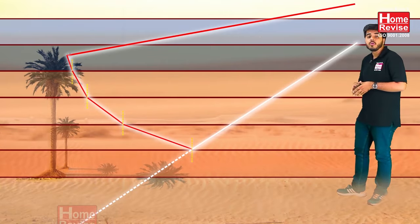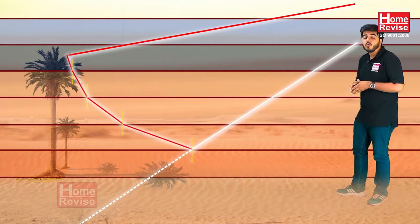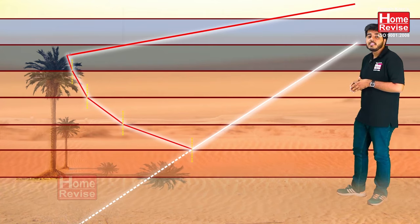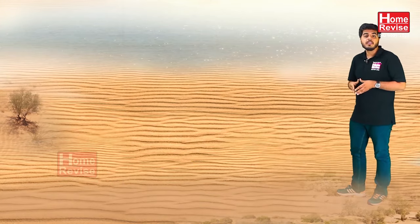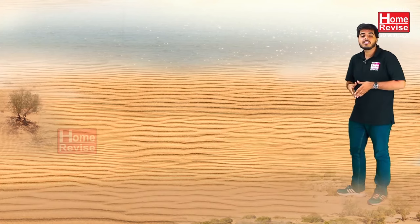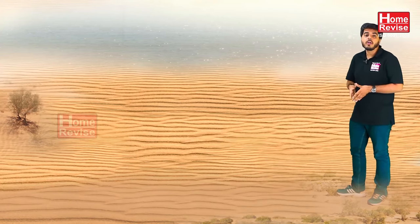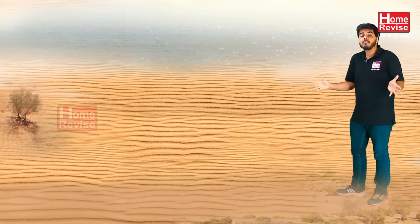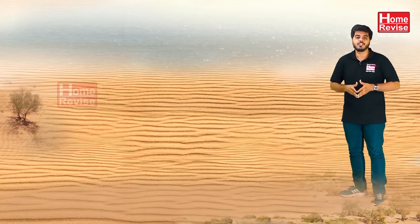Mirage happens due to the total internal reflection of clouds. What we see is the reflection of clouds, and that appears as water. That is the reason during hot summer days we see water bodies that are nothing but an optical illusion called mirage.